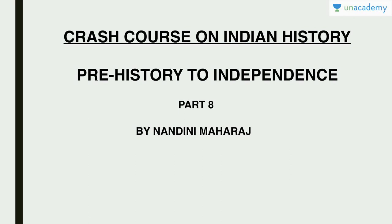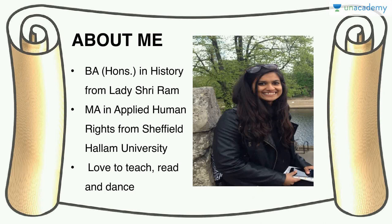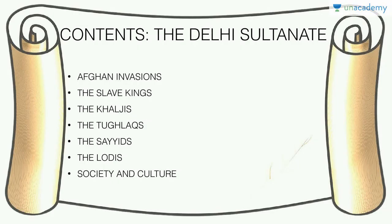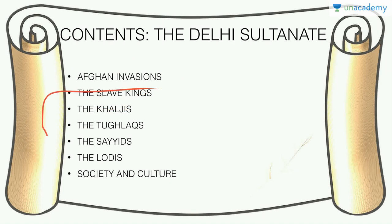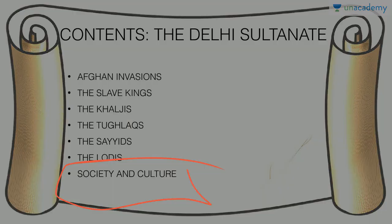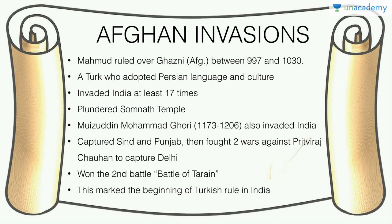In this lesson we move from ancient to medieval history. We'll talk about the Afghan invasions that destabilized northern and central India and made space for the Delhi Sultanate, and then discuss the five dynasties under it: the Slave Kings, the Khaljis, the Tughlaqs, the Sayyids, and the Lodhis, as well as society and culture under the Delhi Sultanate. This is the only lesson covering the Delhi Sultanate before the upcoming prelims.